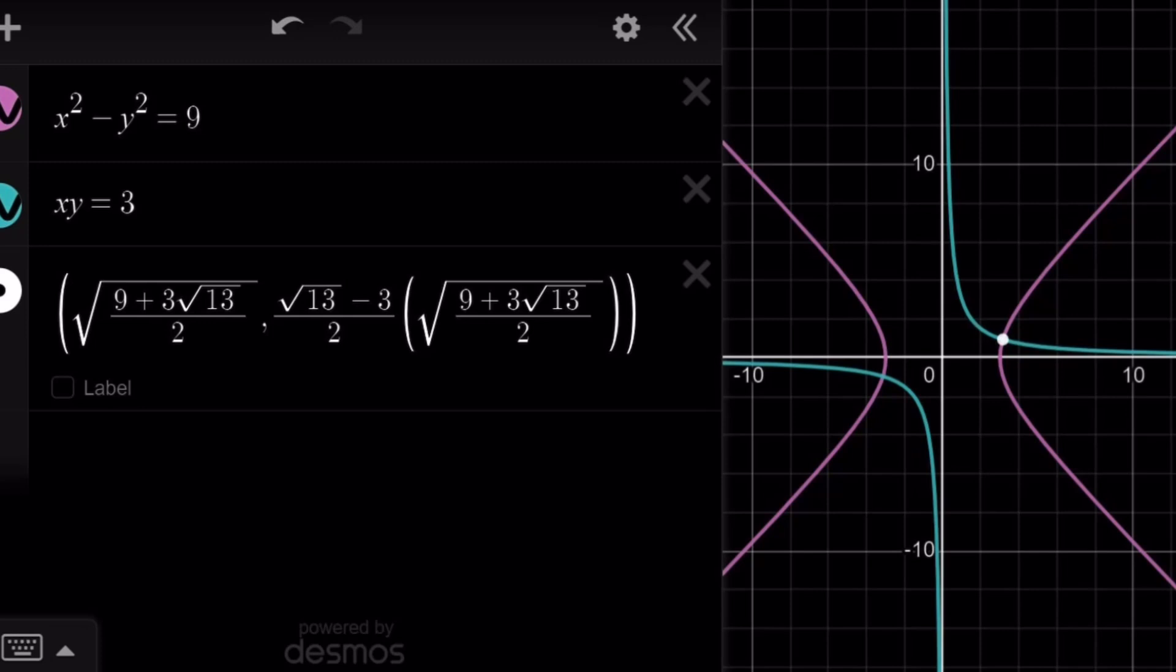So, here's the graph of two functions, or should I say relations? One of them is x squared minus y squared equals 9. That's a hyperbola. And the other one is xy equals 3. That's also a hyperbola. Isn't that interesting? The intersection of two hyperbolas at two points, I marked one of them for you.